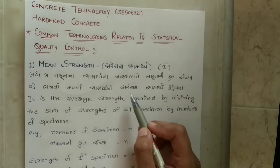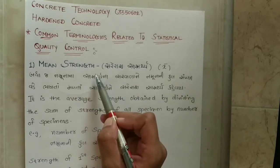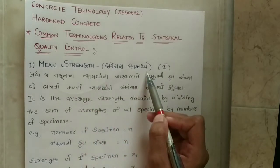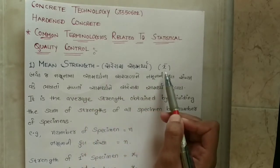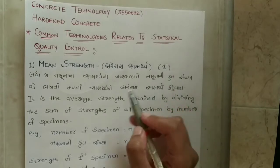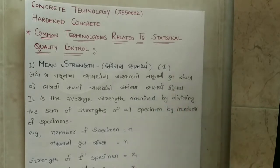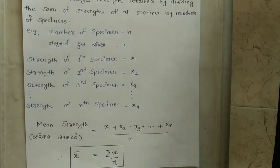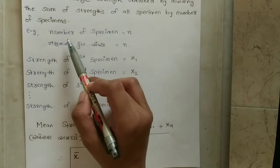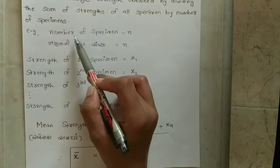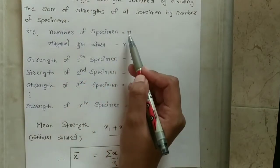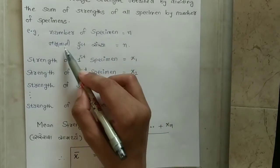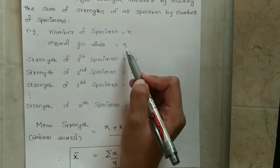The definition of mean strength — denoted by x bar — involves the number of specimens, n. The specimen count is represented as n.